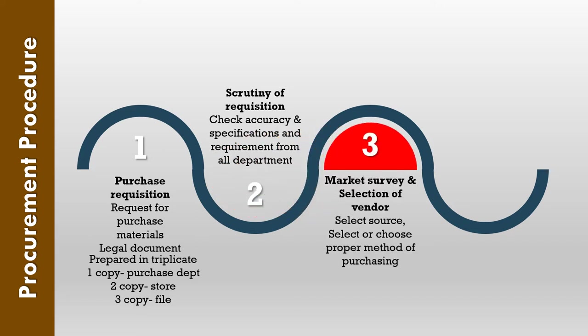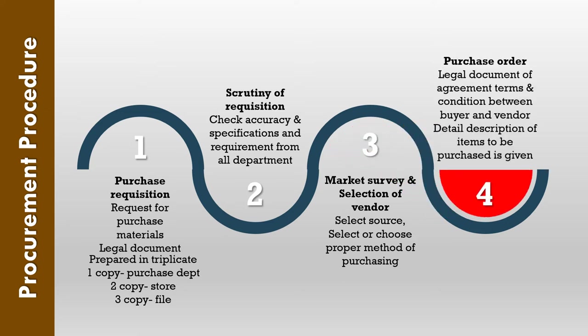The third stage is market survey and selection of vendor. On the basis of specification and requirement, it is the duty of the purchase committee to select the source or choose the proper method of purchasing so that the five R's of scientific purchasing are fulfilled. The last stage is the preparation of purchase order. It is a legal document of agreement for the terms and conditions between the buyer and vendor. Detailed description of each item and quantity should be mentioned in the purchase order, making it a legal document between the purchaser and the vendor.